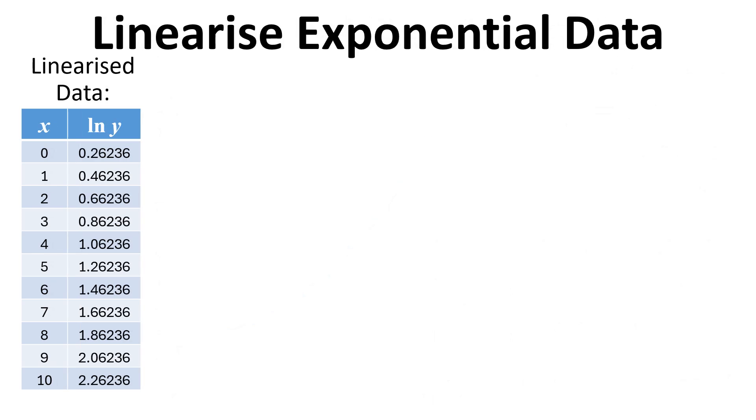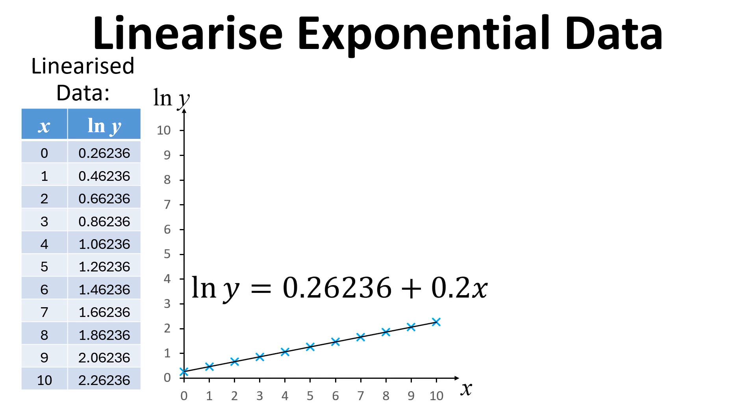Here's the data in its linearized form. We've got the x values as they were before, and now instead of y values, we've got natural log of y values. If we plot that on a graph, we get a straight line. The equation of that straight line is natural log of y equals 0.26236 plus 0.2x.